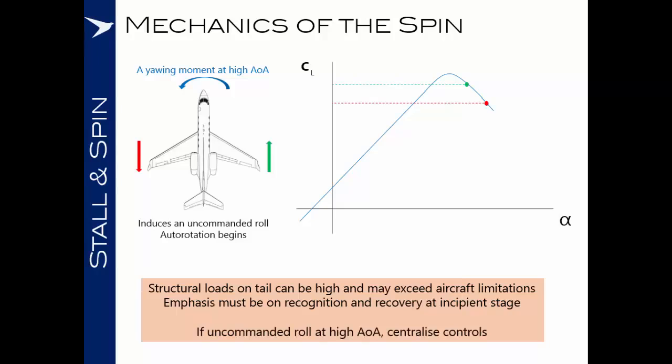If you experience an uncommanded roll or yaw at a high angle of attack, centralize the controls as the first action and work to reduce your angle of attack. In this brief we have seen that beyond a critical angle of attack a stall will occur, and to counter the stall or an uncommanded roll or yaw at a high angle of attack, we must reduce the angle of attack. This is one of the most important lessons from this trajectory.